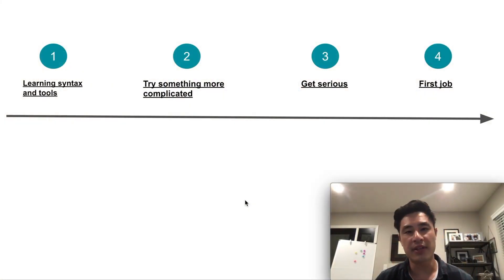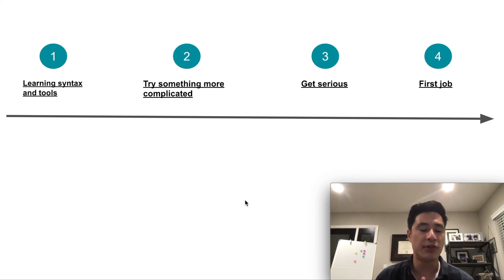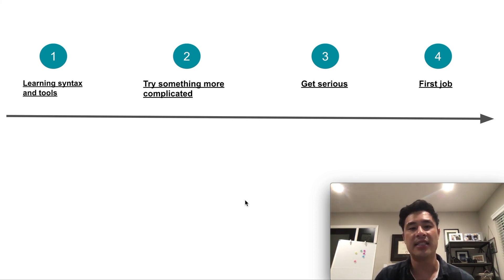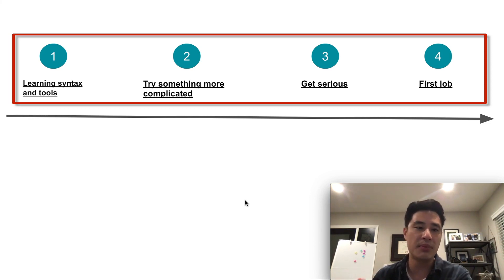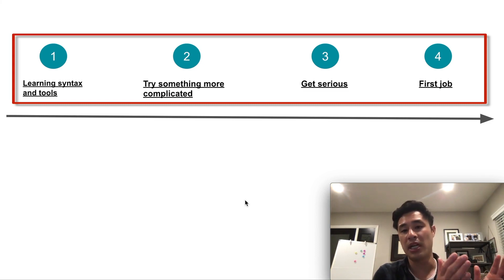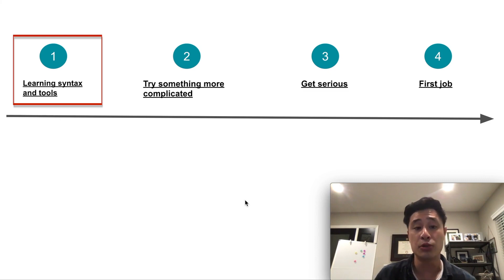From what I've collected from talking to the community as well as reflecting on my own journey, your journey as a data scientist can be broken up into four different stages — going from a complete novice to landing a data science job. There are four stages of education going from a novice to your first job. The first one is learning syntax and tools: your first exposure to data science.